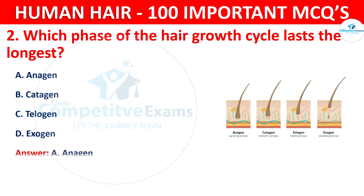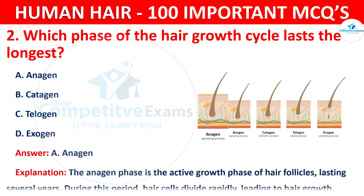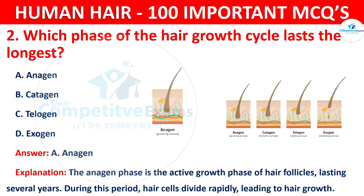The correct answer is A — anagen. The anagen phase is the active growth phase of hair follicles, lasting several years. During this period, hair cells divide rapidly, leading to hair growth.